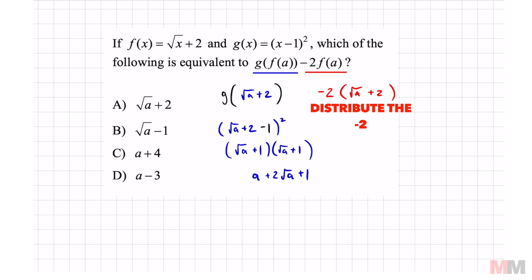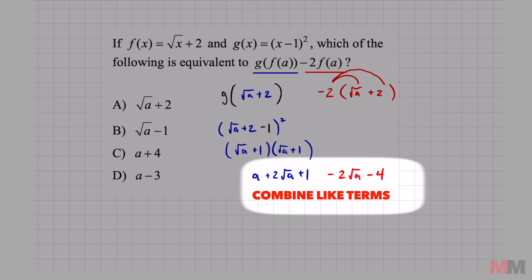If I distribute this negative 2 times square root of a, I'm just going to write it right below so I can combine like terms after. Negative 2 root a, negative 2 times 2 is negative 4. Nice. We are done with all the hard parts and the last thing to do, we just got to combine like terms and we got this.